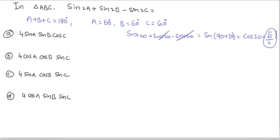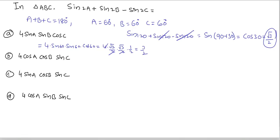Now substituting in the first option: 4sinA sinB cosC = 4 × sin60 × sin60 × cos60 = 4 × (√3/2) × (√3/2) × (1/2). The 4 cancels with the denominators, giving 3/2. This is not equal to √3/2, so the first option is wrong.